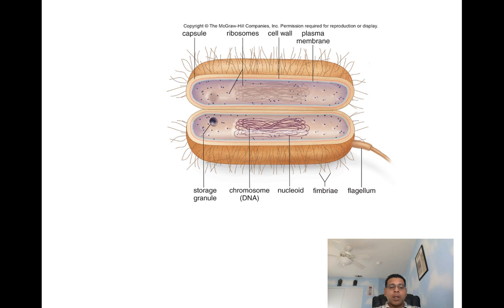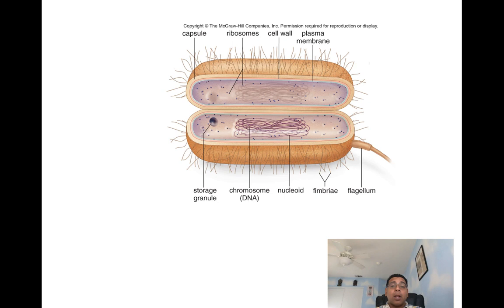Let's look at the structure of a bacterium. All bacterial cells have a plasma membrane, which is a lipid bilayer similar to the plasma membrane in plant and animal cells. Most bacterial cells are further protected by a cell wall made up of peptidoglycan — a polymer of amino acids (hence 'peptido') and sugars (hence 'glycan') — making up the cell wall of all bacteria.